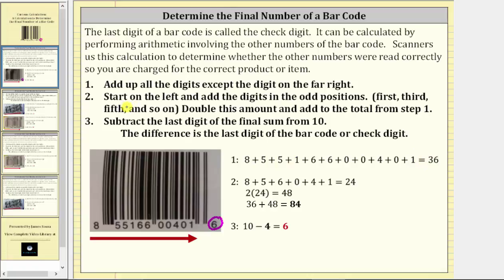Step two: we start on the left and add the digits in the odd positions, which are the first, third, fifth, and so on positions. Let's determine the digits in the odd positions. The eight is in the first position, this five is in the third position, this six is in the fifth position, this zero is in the seventh position, this four is in the ninth position, and the one is in the eleventh position. We then determine the sum of these digits, which has a sum of 24.